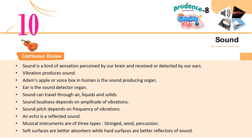Continuous Review: sound is a kind of sensation perceived by our brain and received by our ears. Vibration produces sound. The Adam's apple or voice box in humans is a sound-producing organ. The ear is a sound-detector organ. Sound can travel through air, liquids, and solids. Sound loudness depends on amplitude of vibrations. Sound pitch depends on frequency of vibrations. An echo is a reflected sound. Musical instruments are of three types: stringed, wind, and percussion. Soft surfaces are better absorbers while hard surfaces are better reflectors of sound.